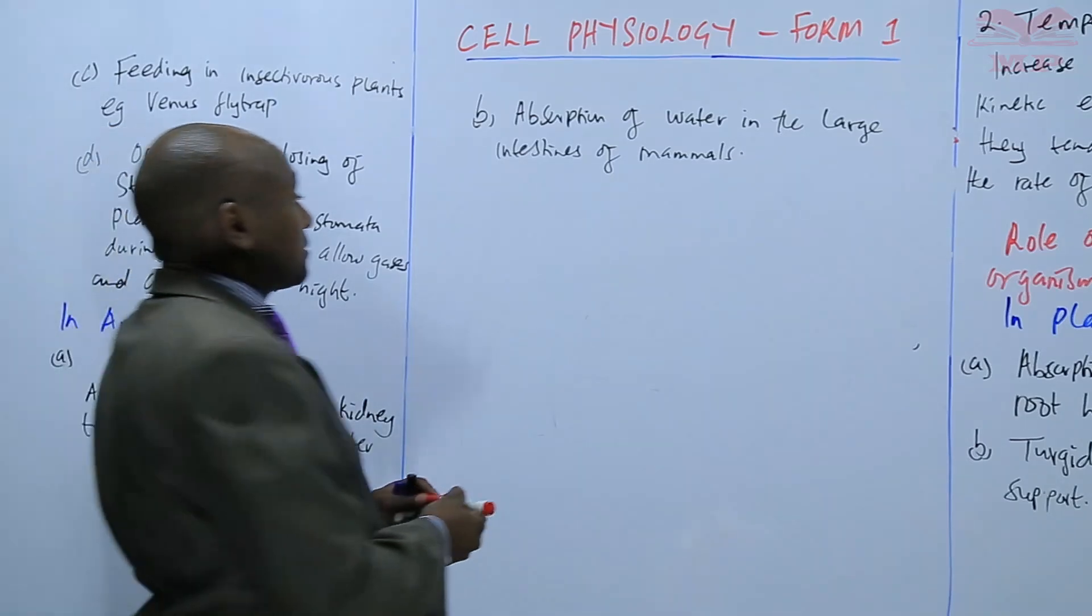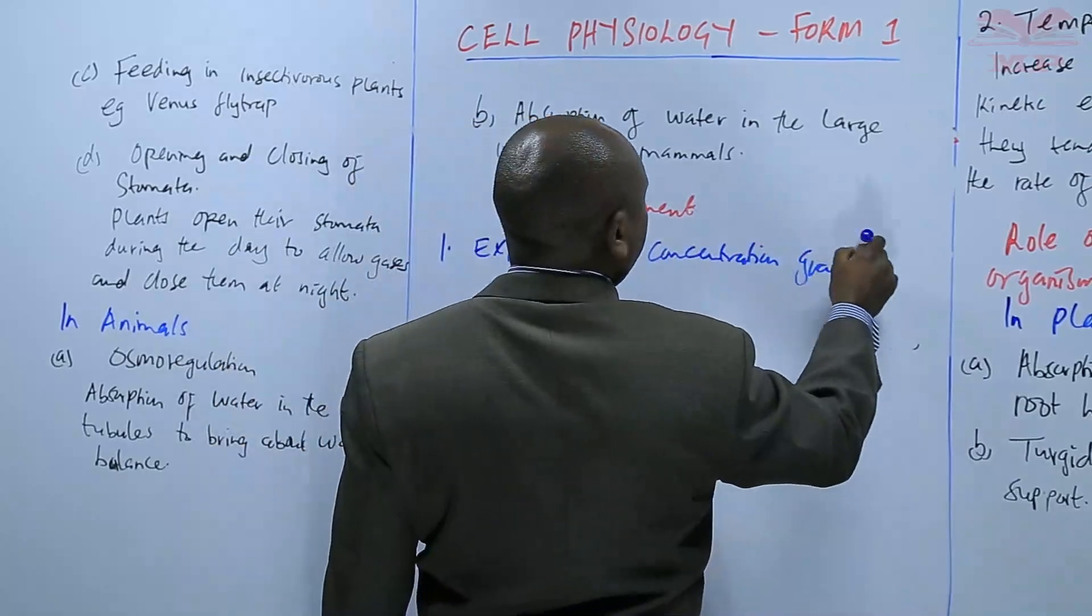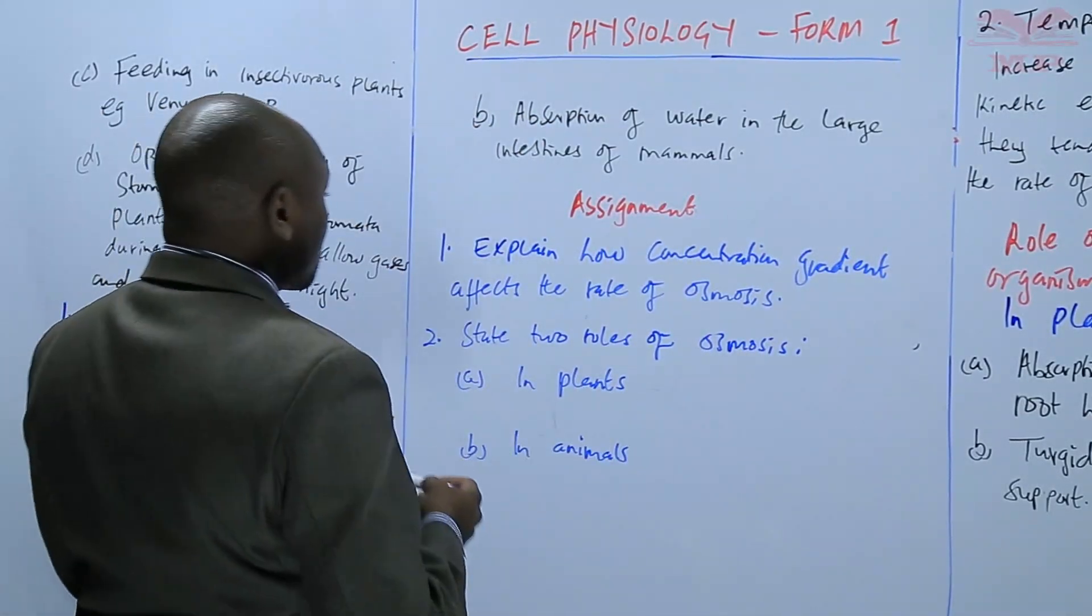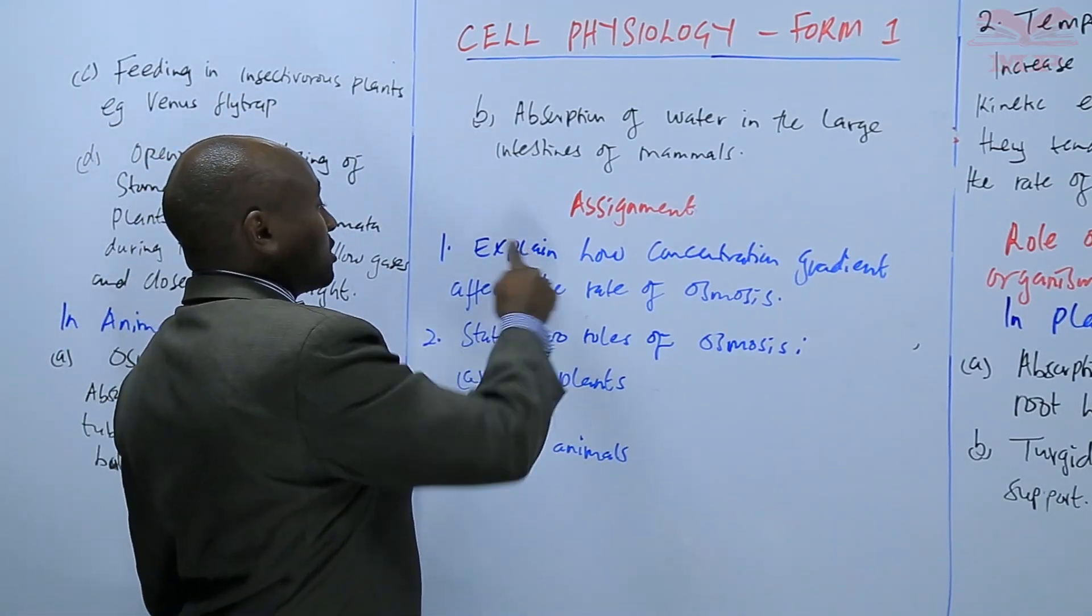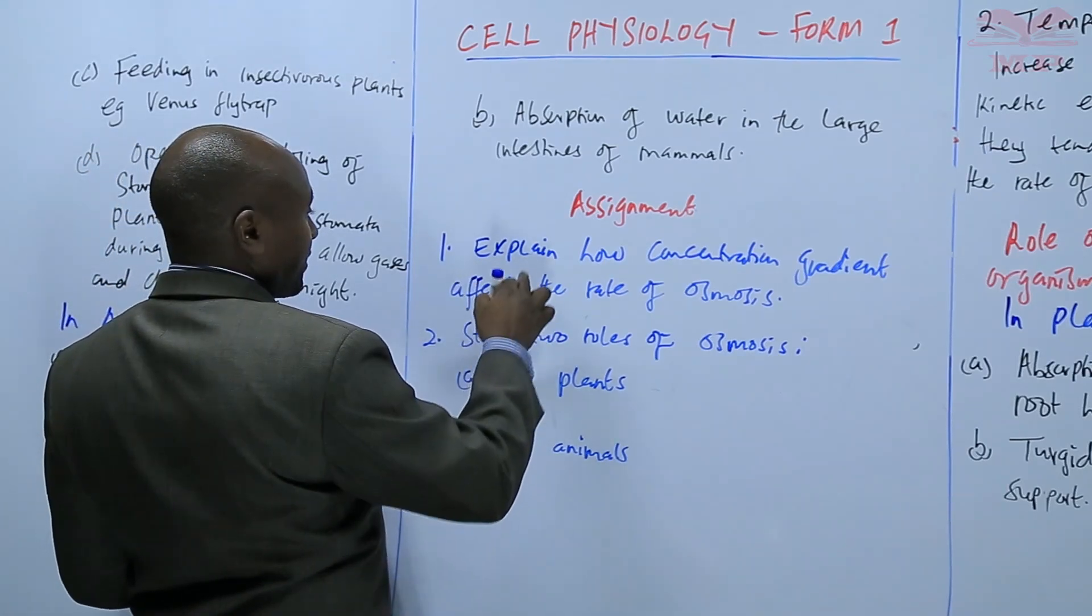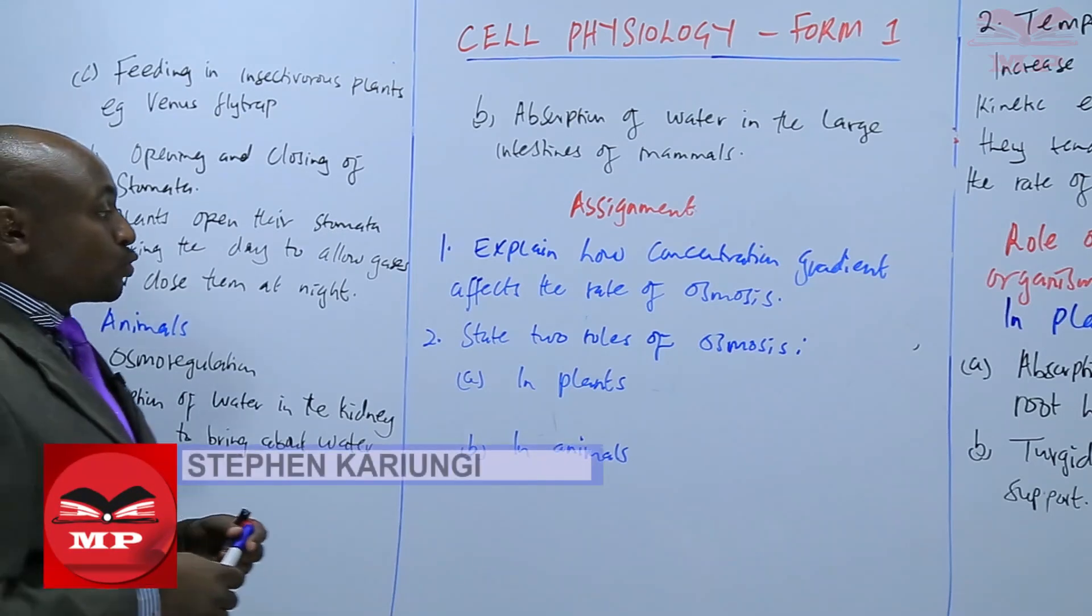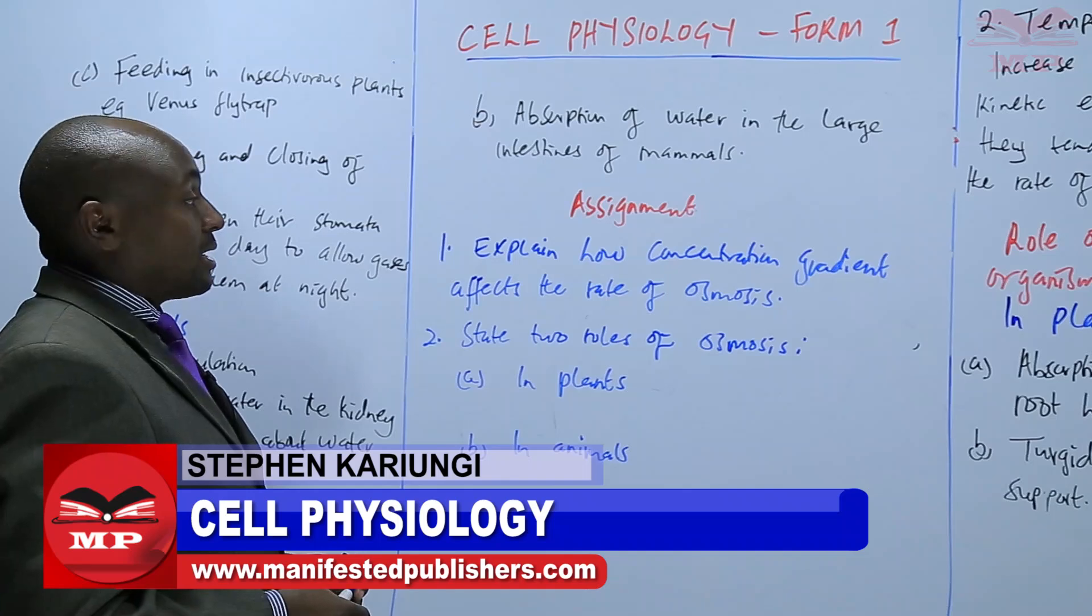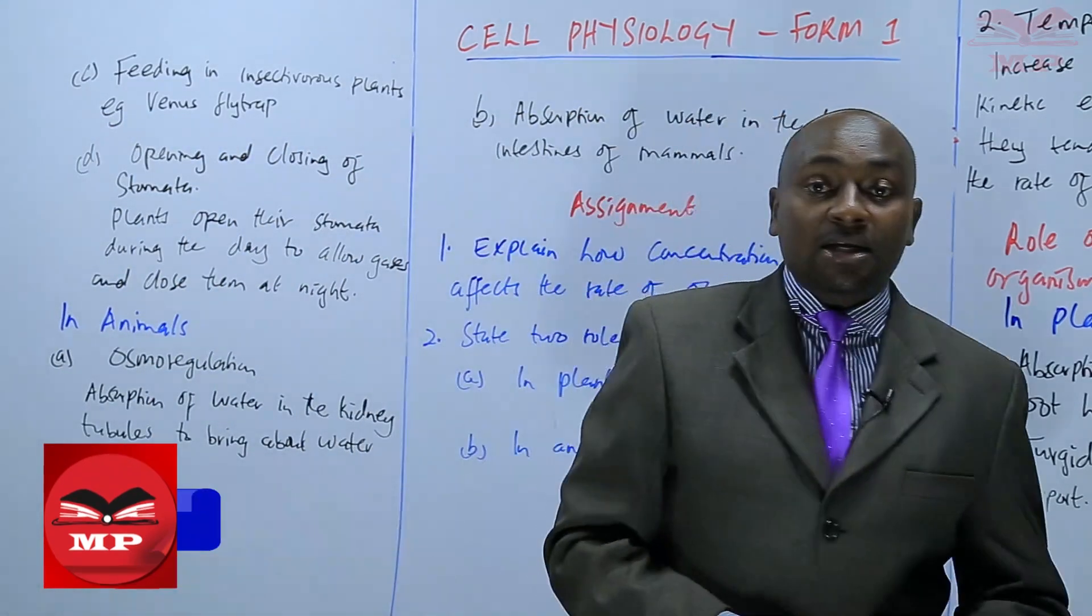The assignment. So, the first question in the assignment, explain how concentration gradient affects the rate of osmosis. And two, state two roles of osmosis, A in plants and B in animals. So, we'll stop there. Until next time, goodbye.